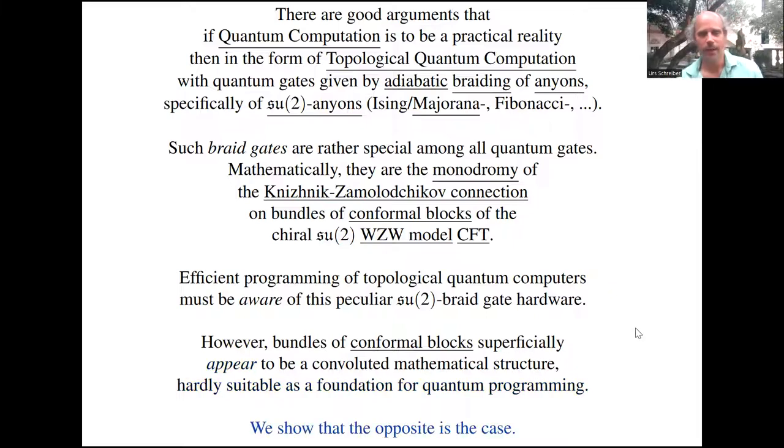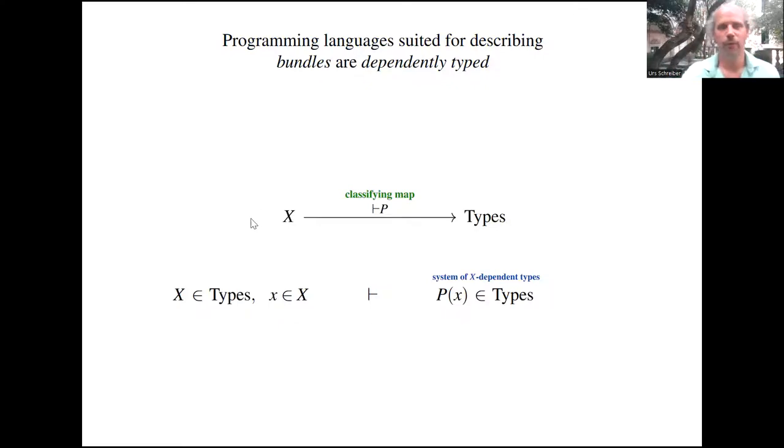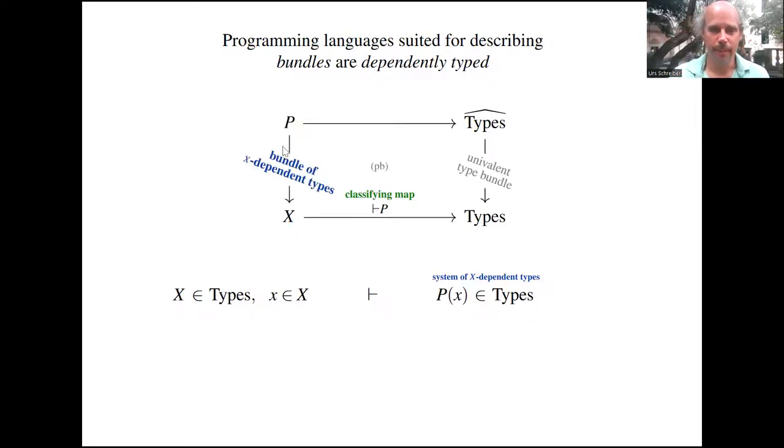But I want to argue that actually the opposite is the case if you make use of recent insights into the foundations of programming languages. Programming languages suited for describing bundles in the mathematical sense are dependently typed. In a dependently typed language, you're allowed to have a given base type x, and for every term in that base type you get another type parameterized, dependent on that term. Semantically this means you have a classifying map from your type x to a type universe. There's a universal, actually univalent, bundle of types over this type universe. Pulling that back realizes your dependent type as a bundle of types over your base type. This is how bundles can be represented in dependent type theories.